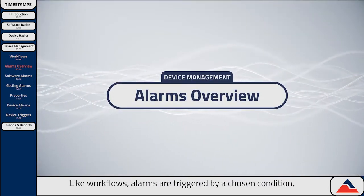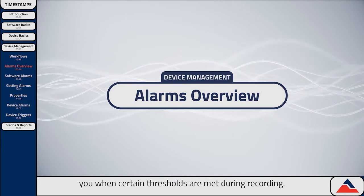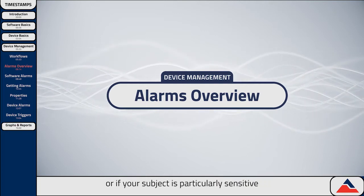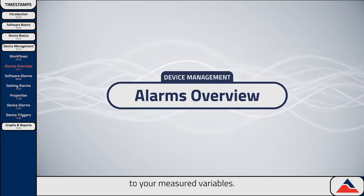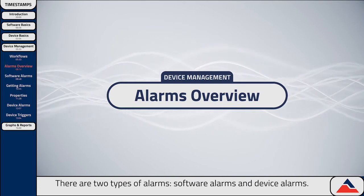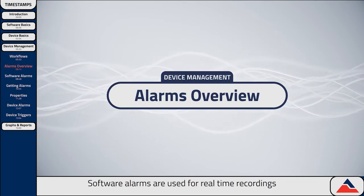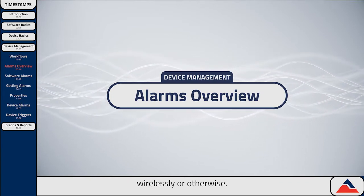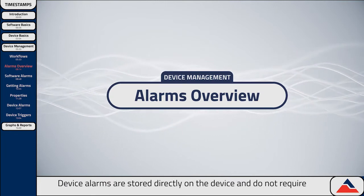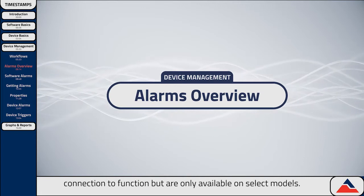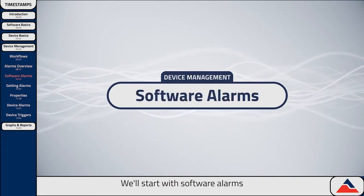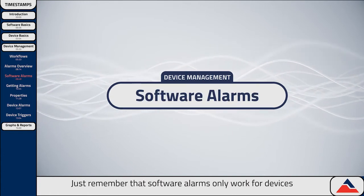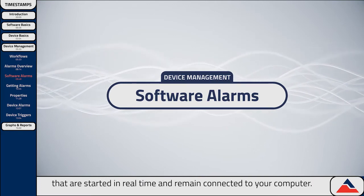Next, let's talk about alarms. Like workflows, alarms are triggered by a chosen condition, but are used to alert you when certain thresholds are met during recording. This is useful when the study must meet certain standards, or if your subject is particularly sensitive to your measured variables. There are two types of alarms: software alarms and device alarms. Software alarms are used for real-time recordings and only apply to devices connected to your PC, wirelessly or otherwise. Device alarms are stored directly on the device and do not require a real-time connection to function, but are only available on select models.